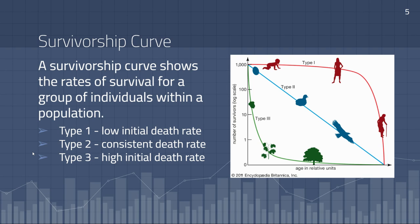Many other K-selected species also fit within a type one survivorship curve — for example, elephants often live on to adulthood. A type two survivorship curve shows a consistent death rate throughout the lifespan of the organism. Lots of different species of birds, lizards, and other small animals fit into this more linear curve. Finally, a type three survivorship curve shows a very high initial death rate that levels out as the organism ages. R-selected species typically fit into this type three survivorship curve.